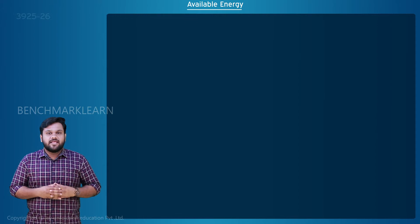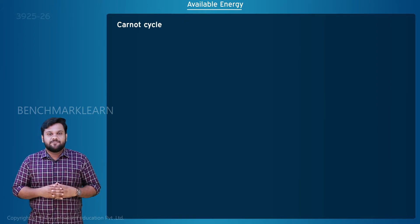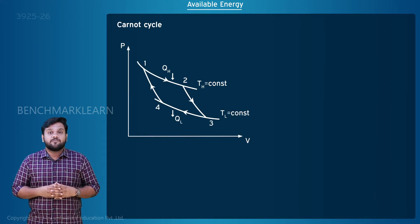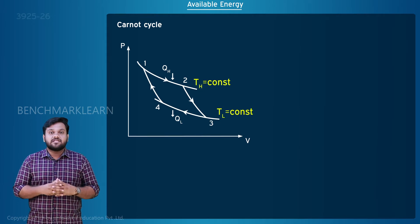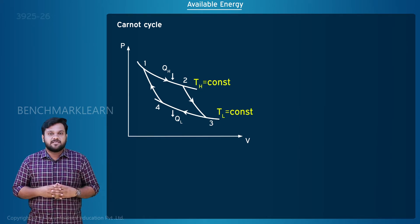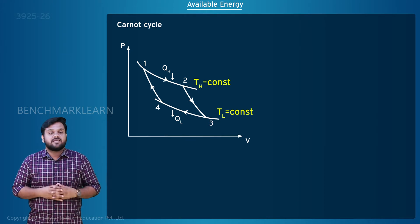The most efficient heat engine is the Carnot cycle. In this, the maximum work produced depends on the temperature limits of thermal energy reservoirs between which the heat engine is working.